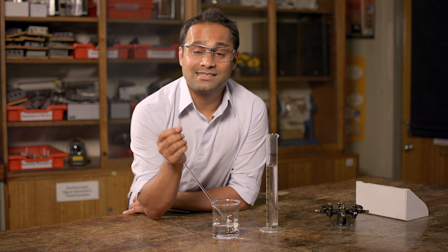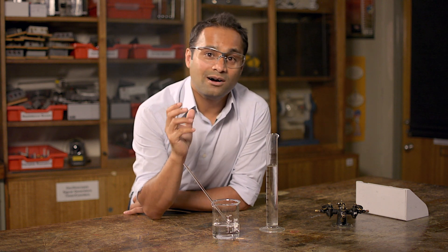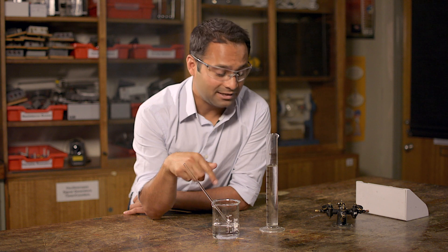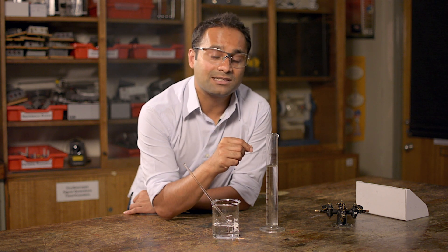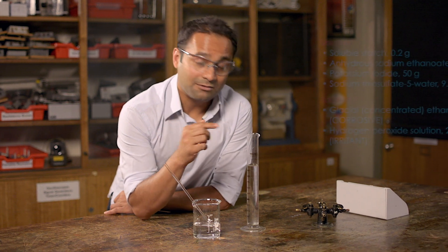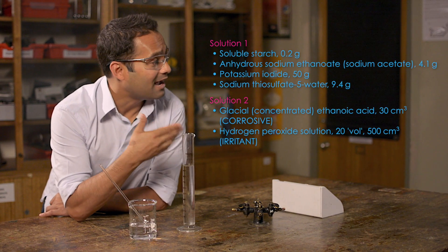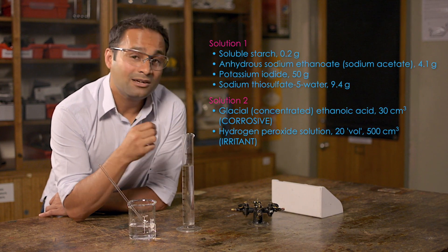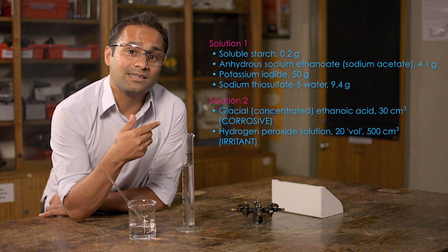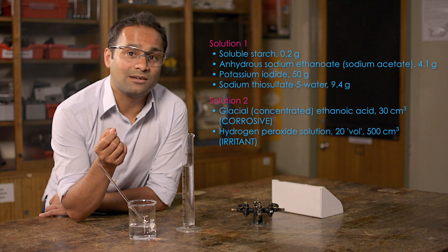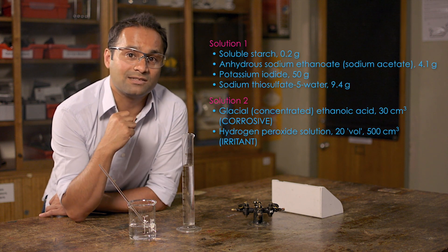The iodine clock reaction is a classic chemistry demonstration that can be done in a number of ways. I'm using a solution of hydrogen peroxide with a mixture of potassium iodide, starch and sodium thiosulfate. Precise instructions for making these solutions up will appear on screen about now. You can pause the video to make a note of these, but I'd recommend you use the teaching notes that accompany this video.